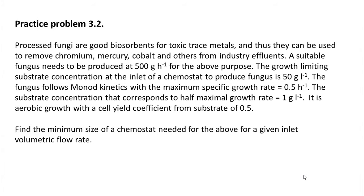Processed fungi are good biosorbents for toxic trace metals, and thus they can be used to remove chromium, mercury, cobalt, and others from industrial effluents. A suitable fungus needs to be produced at 500 grams per hour. The growth-limiting substrate concentration at the inlet of the chemostat is 50 g/L. The fungus follows Monod kinetics with μm = 0.5 hr⁻¹, Ks = 1 g/L, and yield coefficient Yx/s = 0.5. Find the minimum size of a chemostat needed for the above.